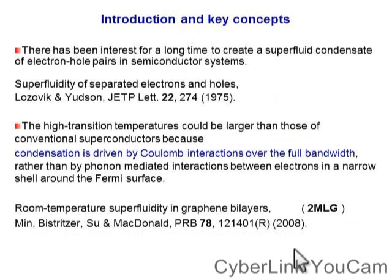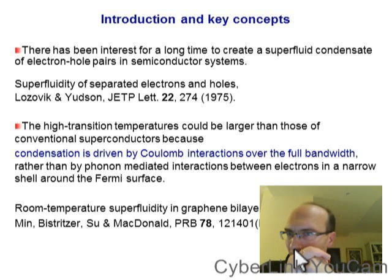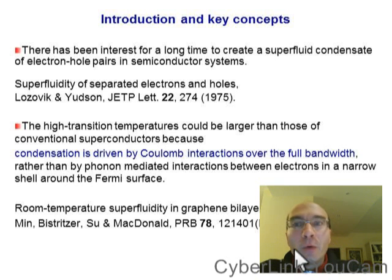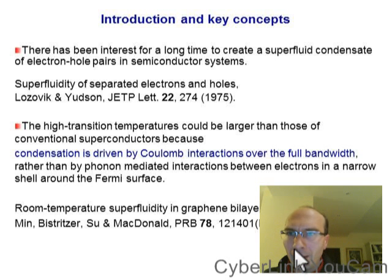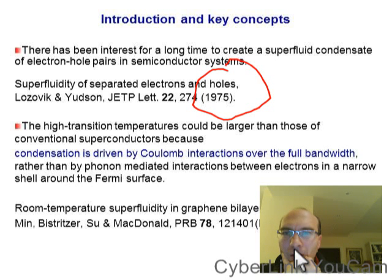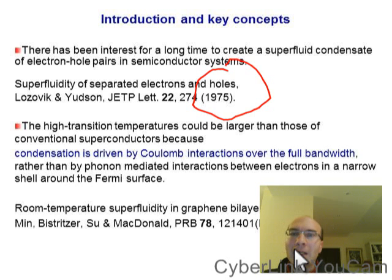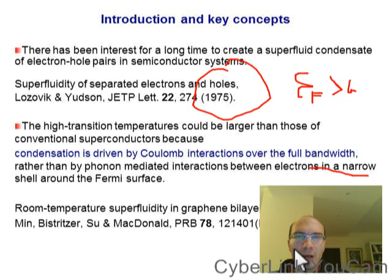Now let's go to introduction and key concepts. From a historical perspective, there has been a lot of interest for a long time to create superfluidity of electron-hole pairs in a semiconductor system where electron-hole pairs can be created. This is the first work of Lozovic and Juzon in 1975. In general, the high transition temperature of electron-hole superfluidity should be larger than conventional superconductors, because condensation is driven by Coulomb interaction over the full bandwidth, rather than by phonon-mediated interaction between electrons in a narrow shell around the Fermi surface. The energy scales are very different: the Fermi energy in comparison with the smaller phononic energy scale.